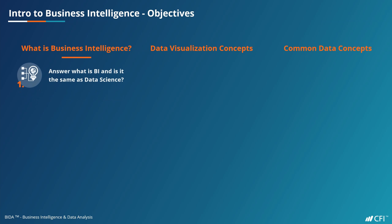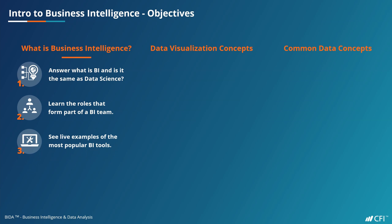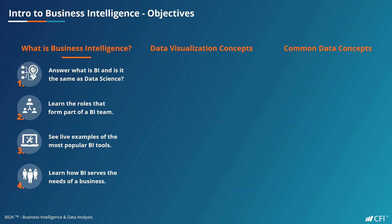In this first chapter, we're going to answer what exactly is business intelligence and is it the same as data science? We'll learn the roles that form part of a business intelligence team. We'll see live examples of the most popular BI tools so you can see exactly how transformative they're going to be to your work. Finally, we'll learn how a BI team serves the needs of a business and how they can be well supported by its leaders.